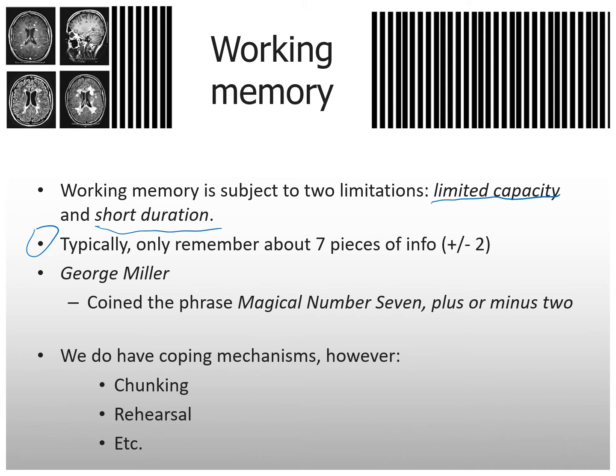We know it lasts about 20 seconds. For limited capacity, typically you only remember about seven pieces of information plus or minus two. George Miller coined the phrase 'magical number seven, plus or minus two,' meaning the range for short-term memory is about five to nine.